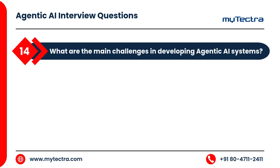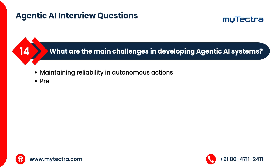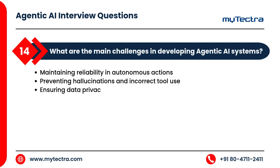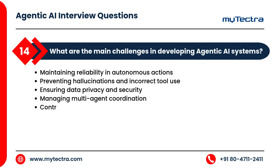What are the main challenges in developing agentic AI systems? Maintaining reliability in autonomous actions, preventing hallucinations and incorrect tool use, ensuring data privacy and security, managing multi-agent coordination, and controlling unintended behavior and bias propagation.